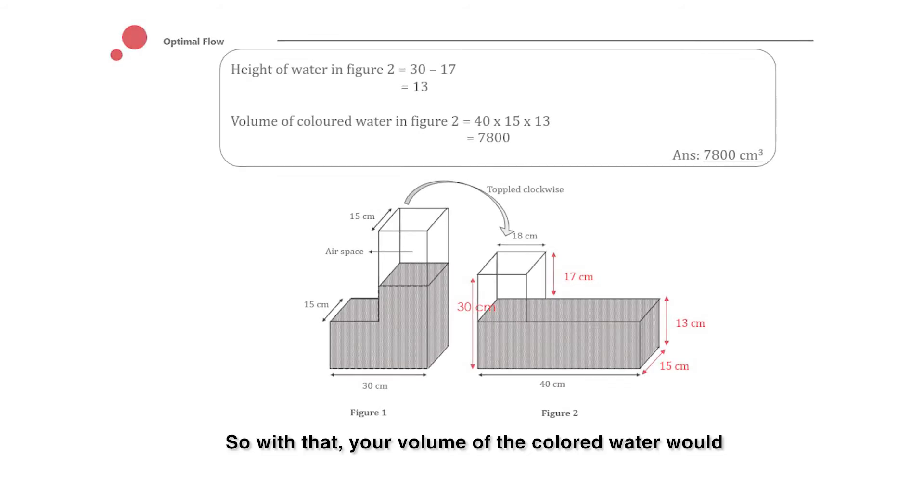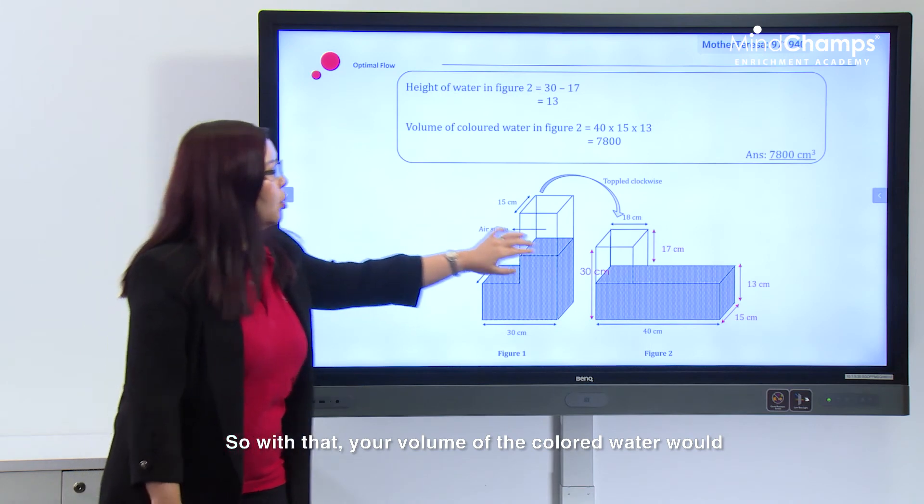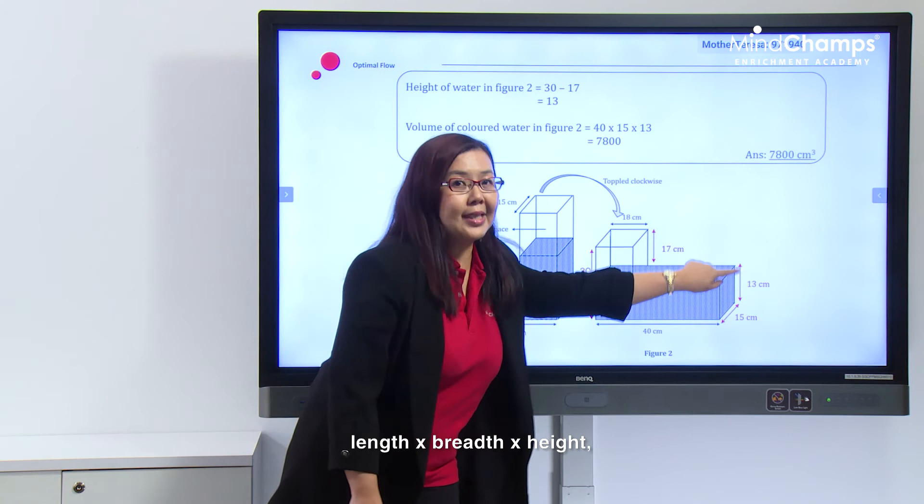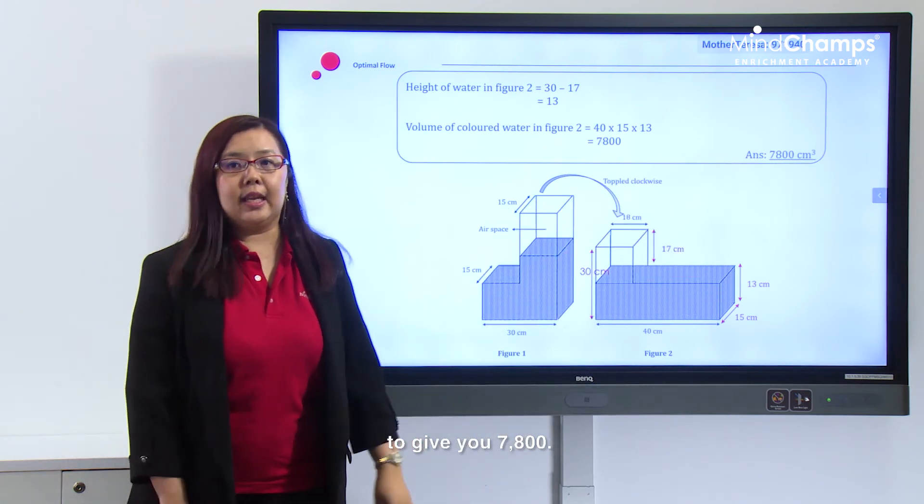So with that, the volume of the colored water is just a direct application of the volume formula: length times breadth times height, which gives you 7,800 cubic centimeters.